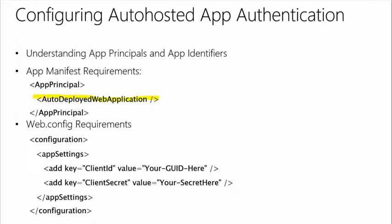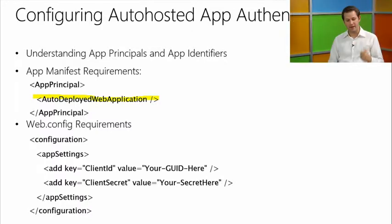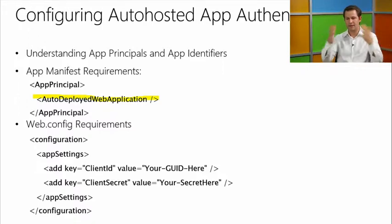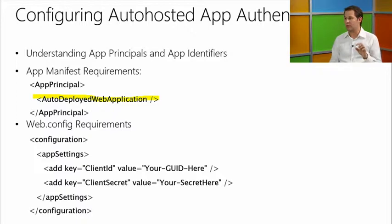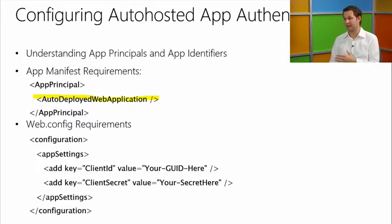In the web.config, you need to put your OAuth client ID and secret. For auto-hosted apps these are filled in on the fly by SharePoint with no control from you. But for provider-hosted apps, this is where you put your OAuth ID and secret. We'll talk more about the OAuth keys when we get into deploying apps later in the session.